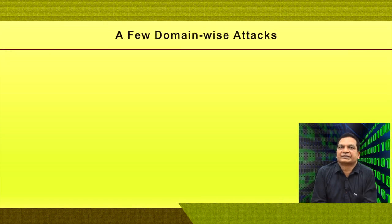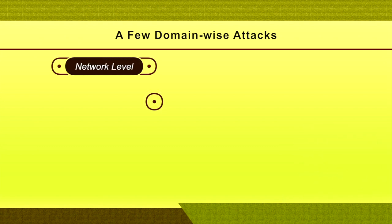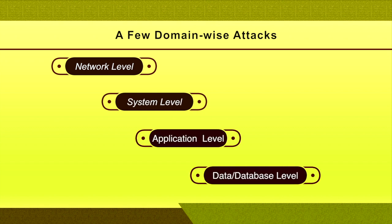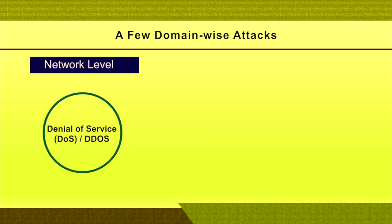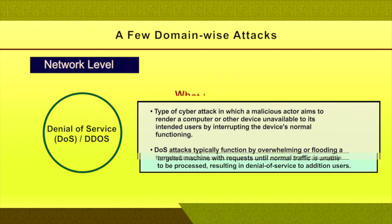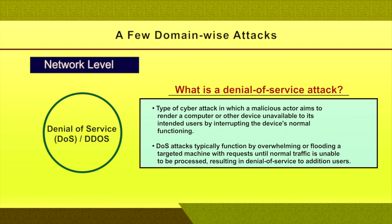Let me clarify some domain-wise attacks. In an organizational IT setup there are different levels: network level, system level, application level, and data or database level. At network level — at the institutional gateway — one of the most commonly used attacks is denial-of-service (DoS) and distributed denial-of-service (DDoS).